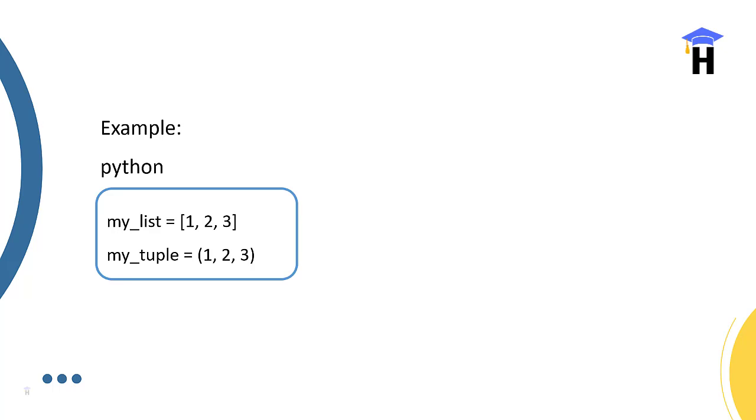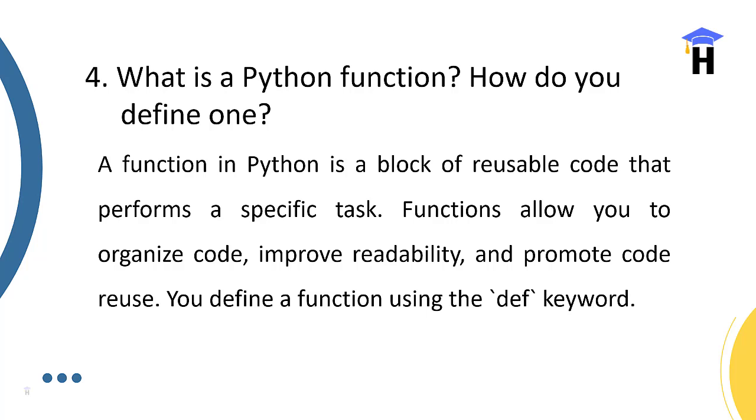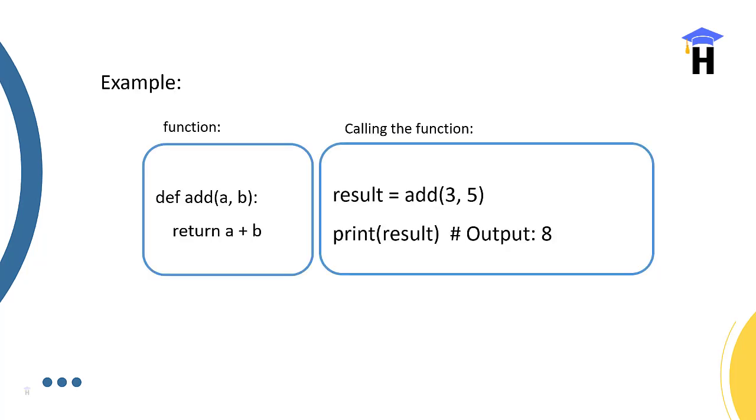What is a Python function and how do you define it? A Python function is a block of code which can be reusable. When the function is created, we call the function for reusability for a specific task. Functions allow you to organize and improve readability, promote code reuse. You define a function using the def keyword.